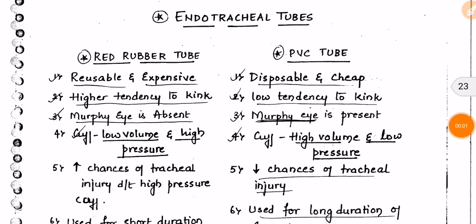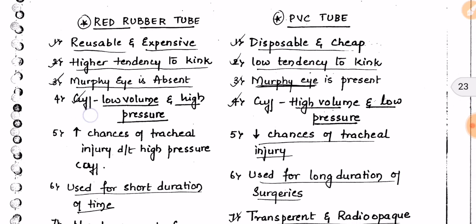Hey guys, let's move to the endotracheal tube now. We've got two types of endotracheal tubes: the red rubber tube and the PVC tube. The red rubber tube is reusable and expensive, while PVC is disposable and cheap.